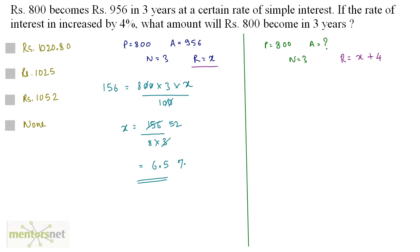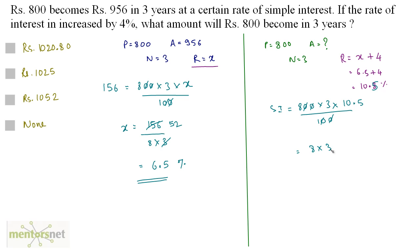The new rate of interest will be 6.5 plus 4, which is 10.5 percent. Now let's calculate the simple interest: SI equals PNR upon 100, that's 800 times 3 times 10.5 upon 100. The zeros cancel out, leaving 8 times 3 times 10.5, which equals 252 rupees. The amount equals principal plus interest, so 800 plus 252 gives Rs. 1052.